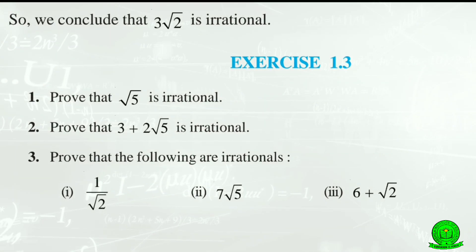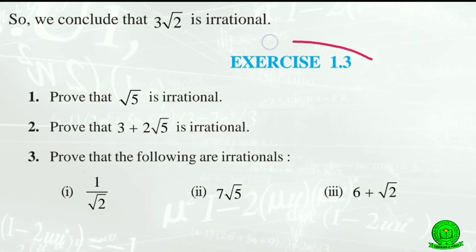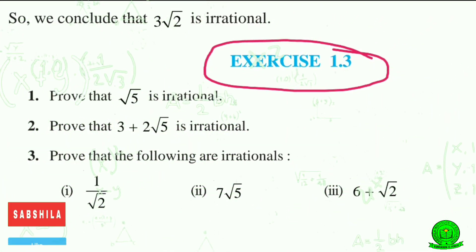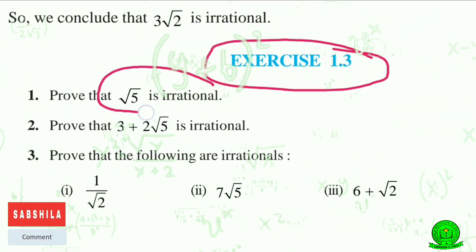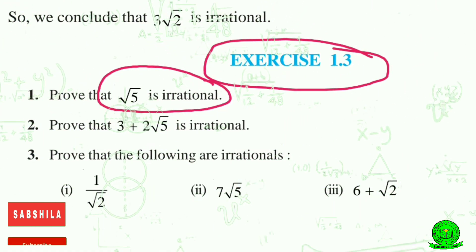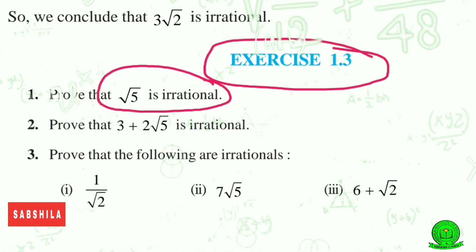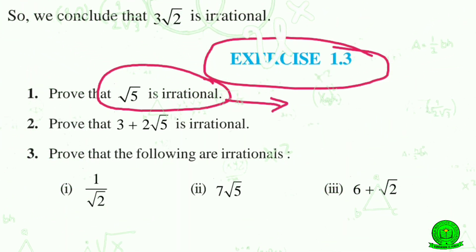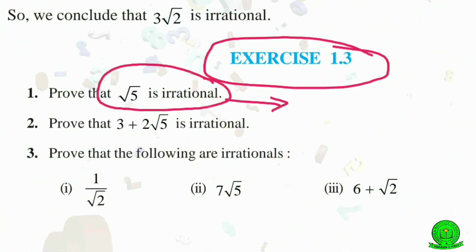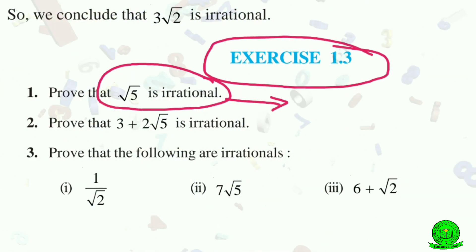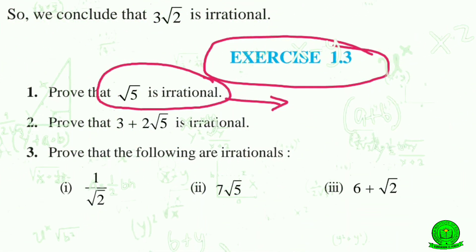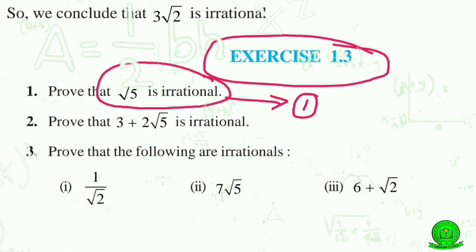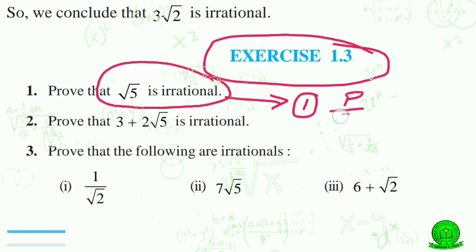Today I'm starting the solution video of Exercise 1.3. In Exercise 1.3, we have to prove some numbers as irrational numbers. If you see, all are prime numbers — all prime numbers written under a root will be irrational numbers. The first step is to assume the given number is a rational number, that means in the form of P by Q.